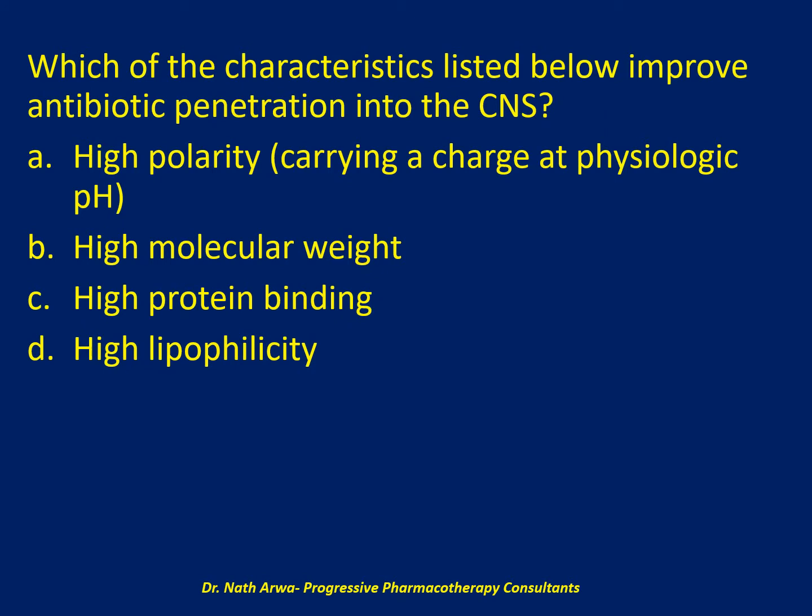The first question reads: which of the characteristics listed below improve antibiotic penetration into the CNS? Is it A, high polarity — that is, carrying a charge at physiologic pH? Is it B, high molecular weight? Is it C, high protein binding? Or is it D, high lipophilicity? I'll give you 10 seconds to choose the correct answer.